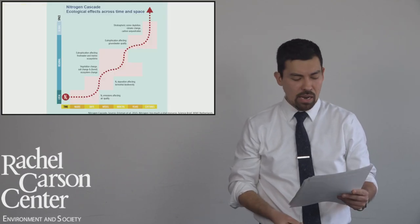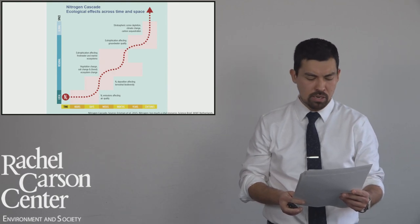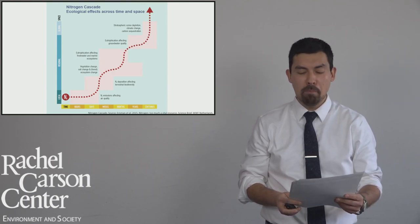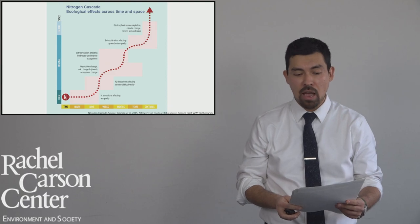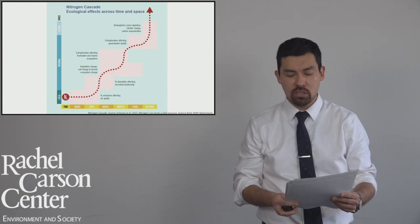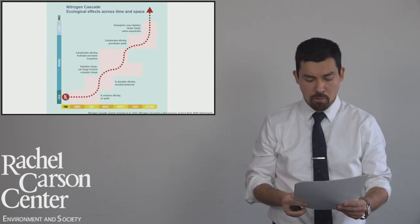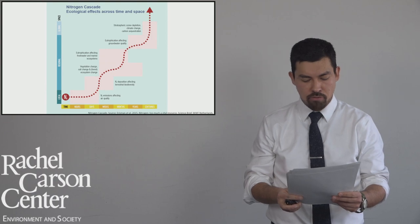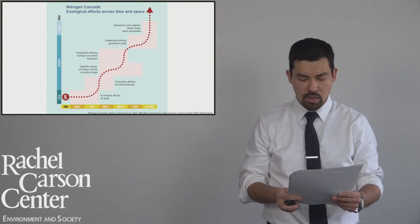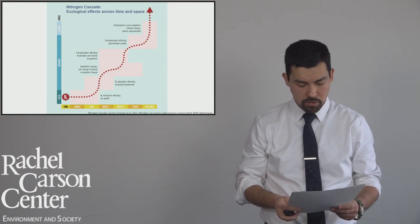The nitrogen cascade concept has offered scientists an umbrella term to conceptualize the multiple impacts of nitrogen across time and space. The concept emphasizes that nitrogen lost into the environment circulates across time and space, from local to global scales and from days to centuries, in ways that present ecological, disciplinary, and political boundaries.